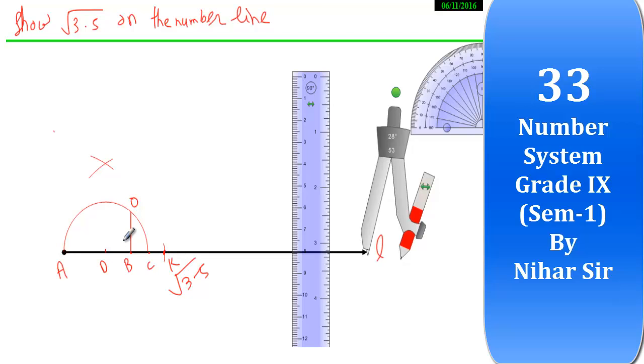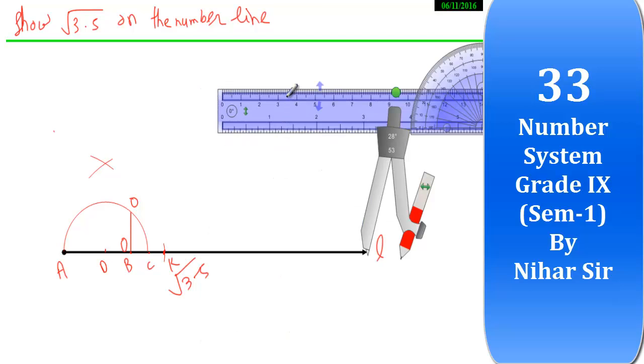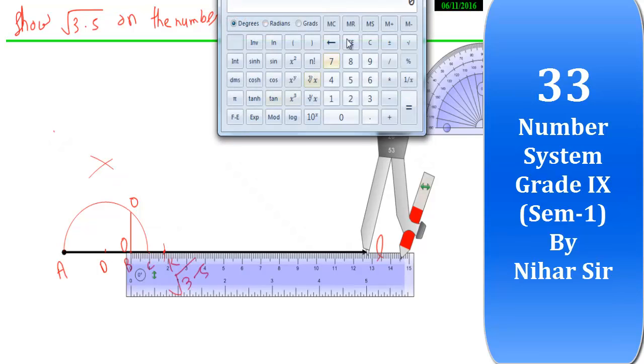So now this is my zero. B is considered as zero in this kind of number line. Let us check measurement. It seems 1.7 something. So let us check it out on calculator, what is the value of root 3.5. So it is 1.78. So you can see about 1.78.